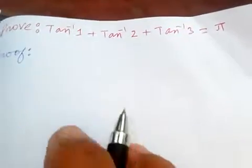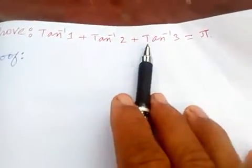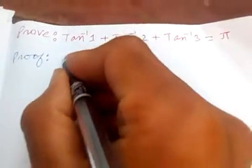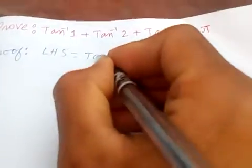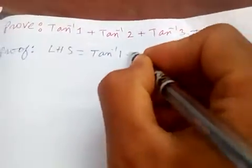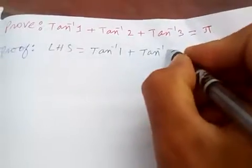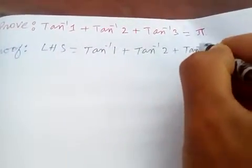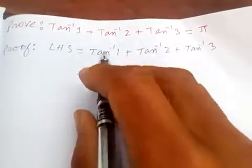Hi friends, today let's prove arctan(1) + arctan(2) + arctan(3) = π. Starting from the left-hand side, we have arctan(1) + arctan(2) + arctan(3).